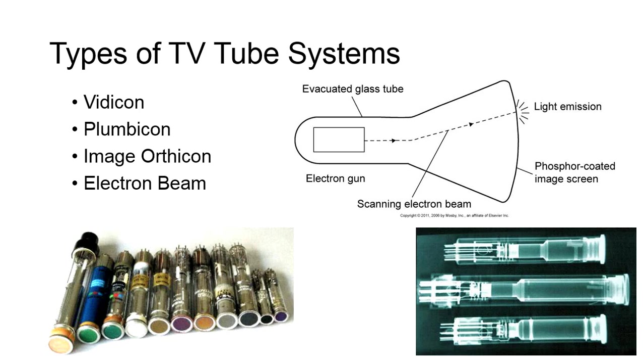And the Electron Beam type of TV camera tube is synchronized with the TV monitor, and is produced by thermionic emission.